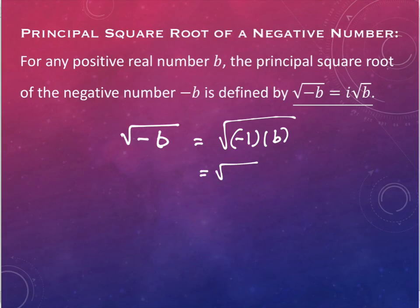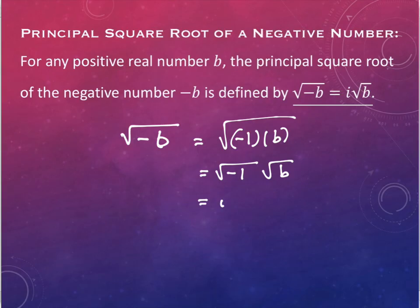I can separate the square root to be over each piece — this works because they're multiplied. If they were added or subtracted you can't do this, but because they're multiplied, you can. And the square root of negative 1 is i, so you get i times square root of b.